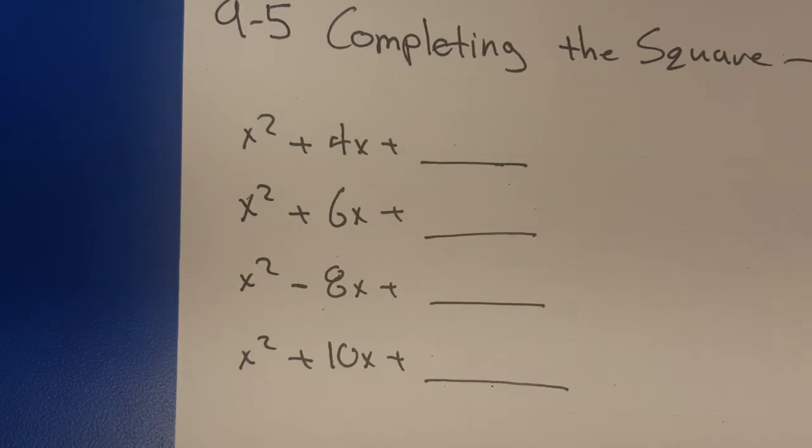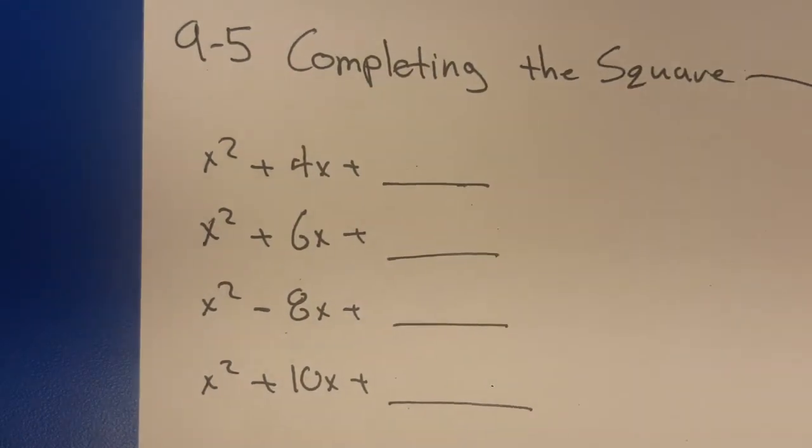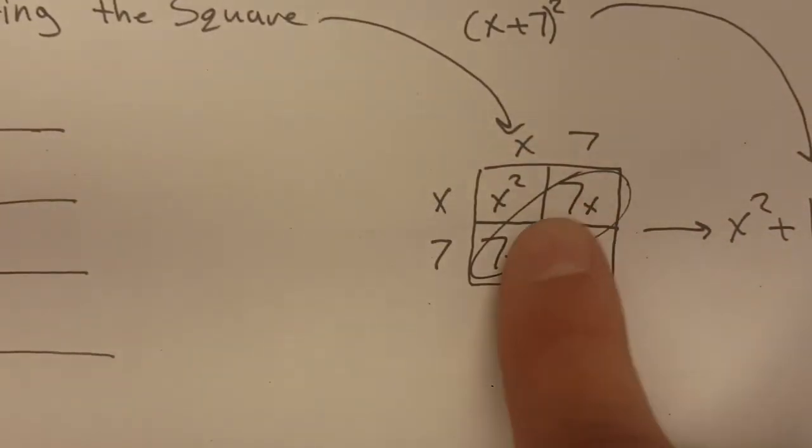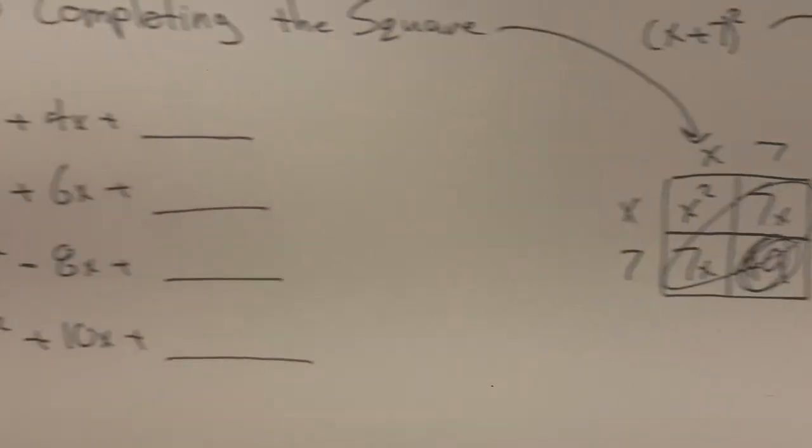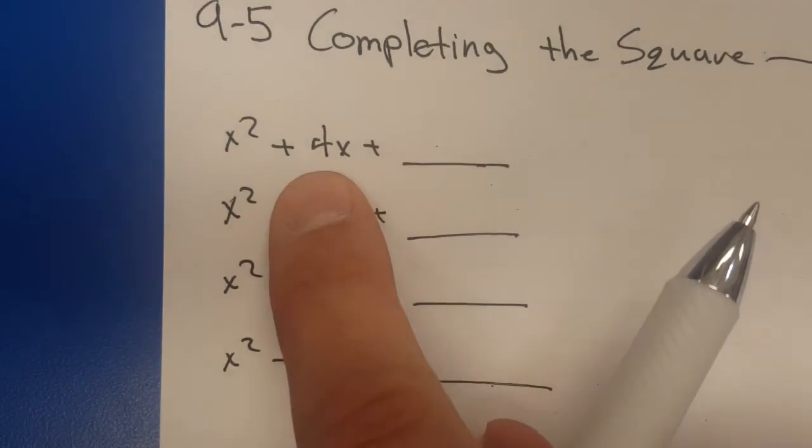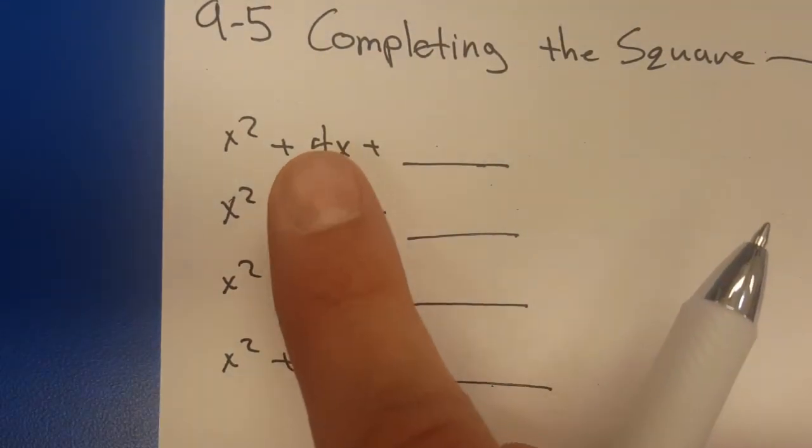Look at these ones. These are all missing the squares. So this is called completing the square, because we're trying to complete this. We're missing this piece right here. So here's what you do. You look at the middle number, you chop it in half, and then you square what's left over.